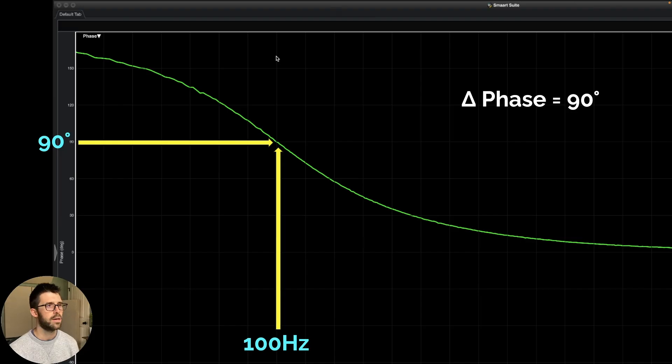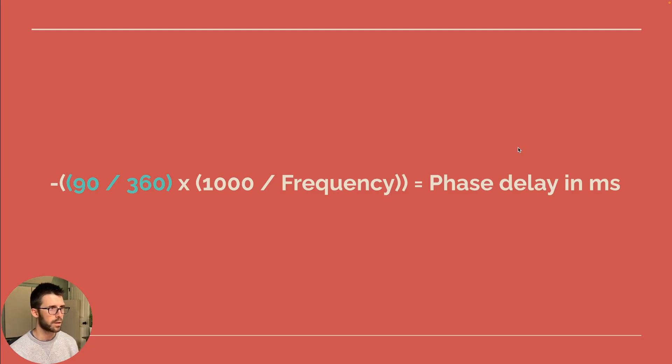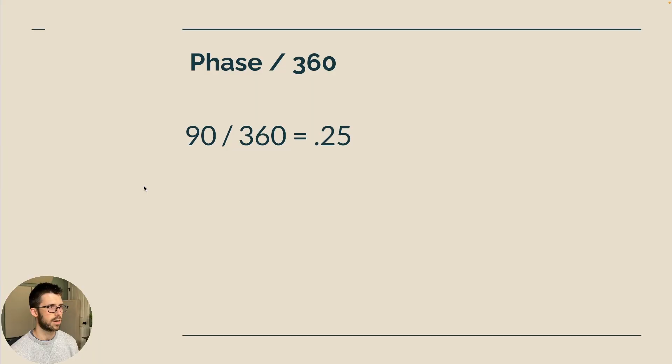So again, we want to take these numbers and plug it in. We have found that we are concerned with 100 hertz. And we now know that is 90 degrees offset from where it was. Plug that in here, I now have 90 divided by 360. And let's solve that. So 90 divided by 360 is 0.25.